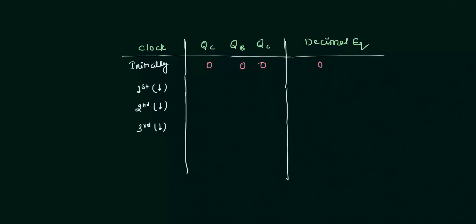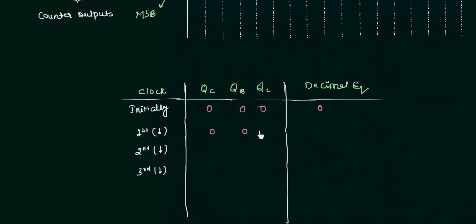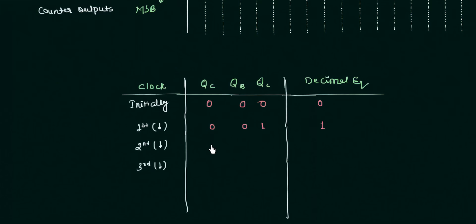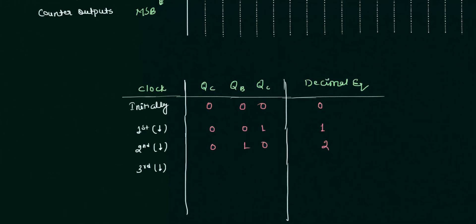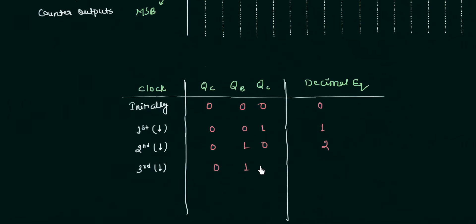For the second falling edge, QA = 0, QB = 1, QC = 0, giving 010 which is definitely equal to decimal 2. For the third falling edge, QA = 1, QB = 1, QC = 0, giving 011 which is the decimal equivalent of 3.